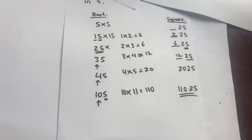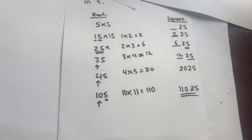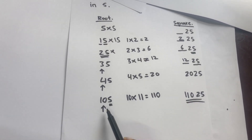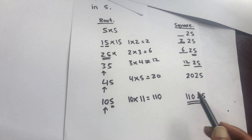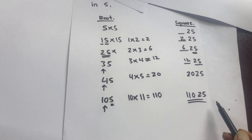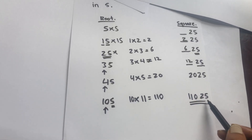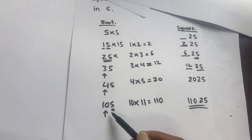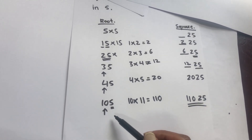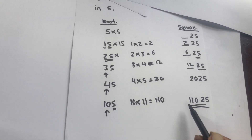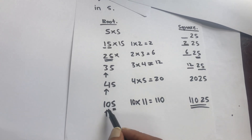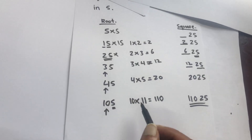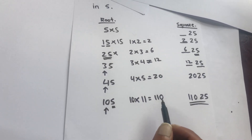There are two things to remember. First, if a number is ending with 5, its square will have 25 as the last two digits. Second, look at the number that is before 5 and multiply that number with a number one greater than that number.